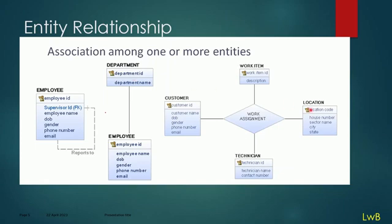Relationship can be among multiple entities. For example, we have a customer, a technician, a work item, and a location — and we have a work assignment. A technician is assigned on a work item for a customer at a location. This work assignment can be a relation as well as an entity. In short, an entity relationship is nothing but an association among one or more entities, and that association has varying scope.